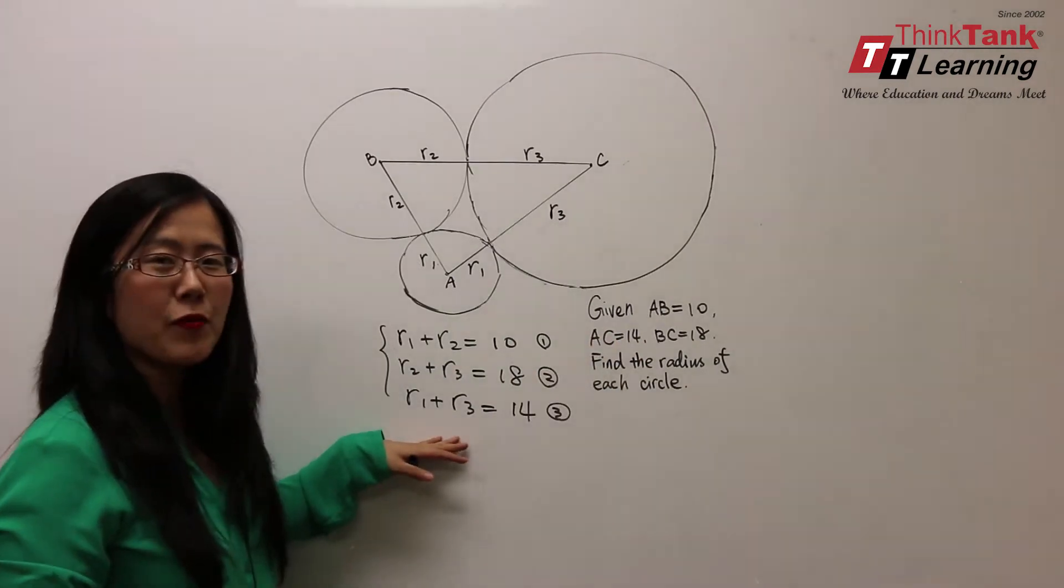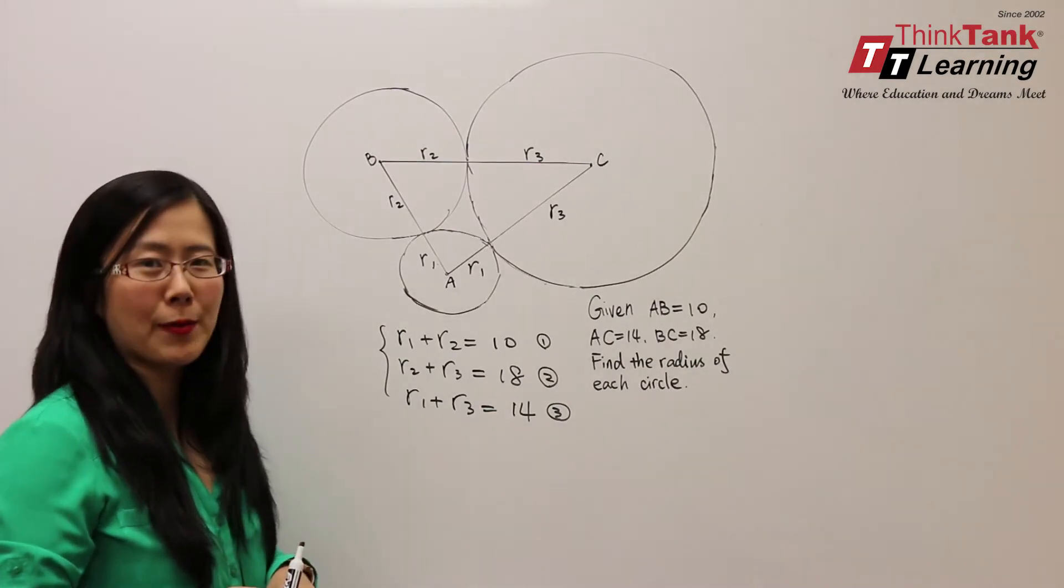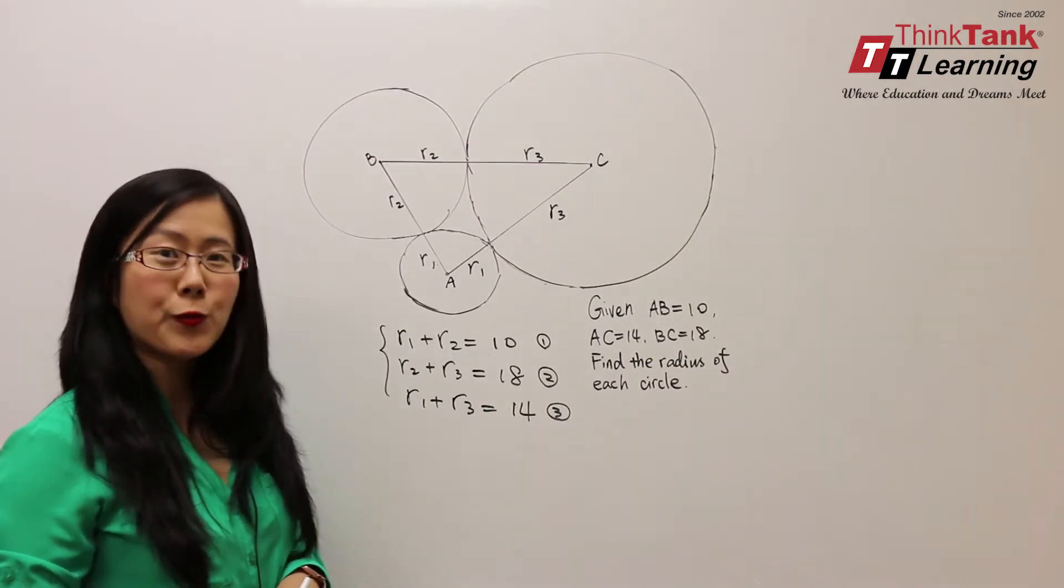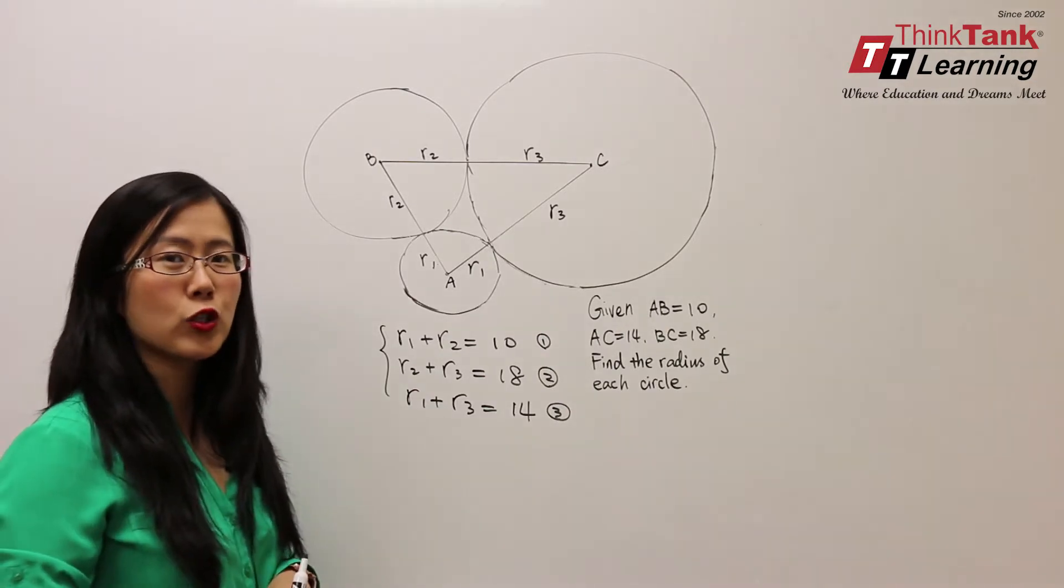So now we have a system of equations with three variables and three equations. We will be able to solve it. There's a quick way to solve this system of equations. You can add all of the three equations together.